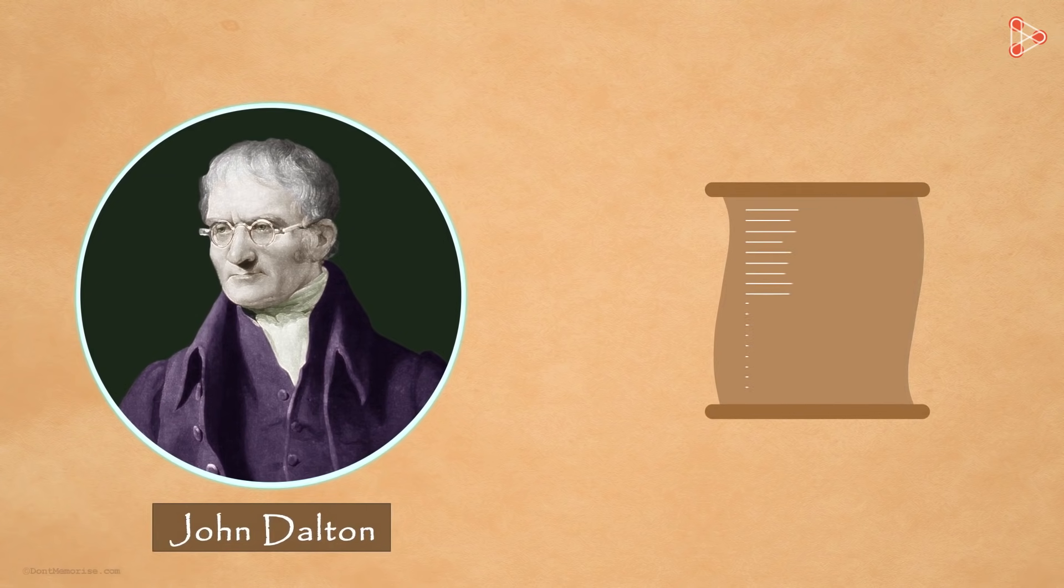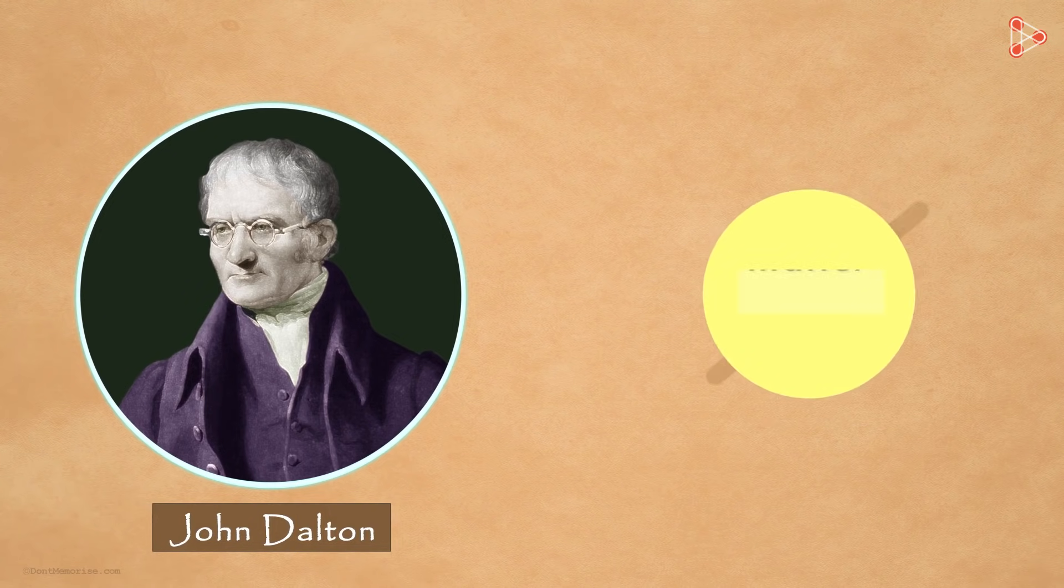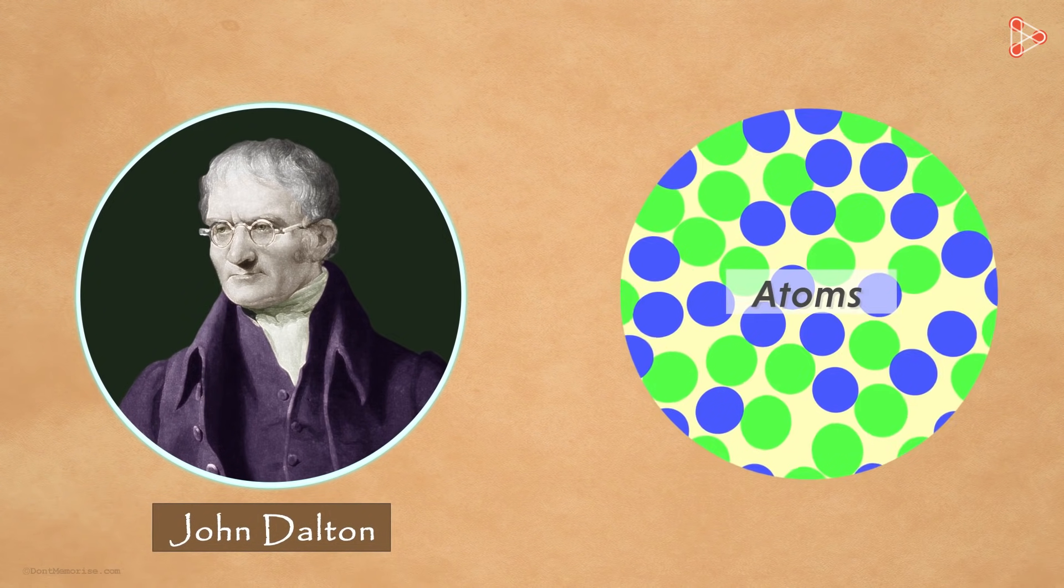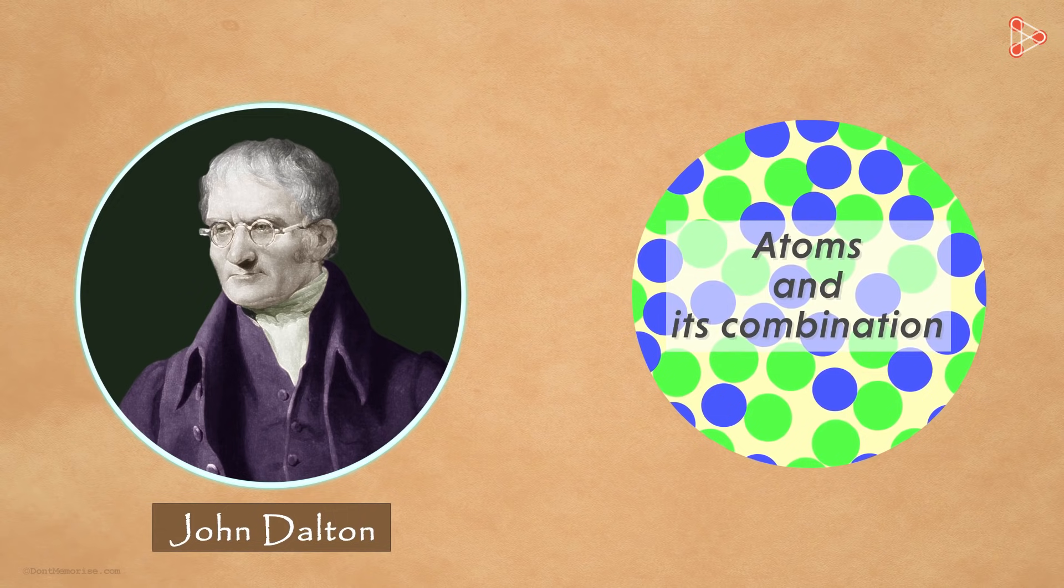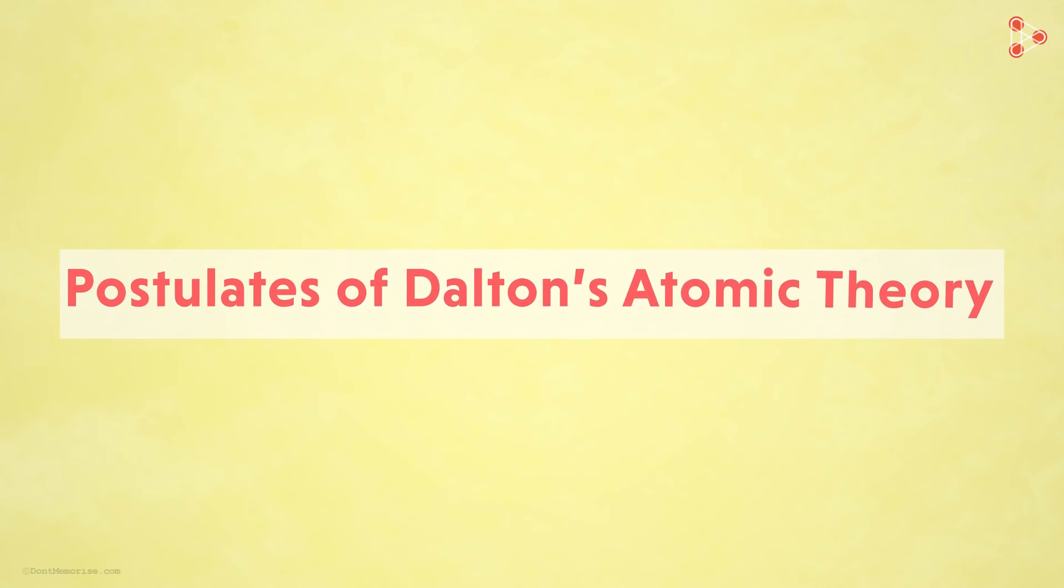He proposed a theory which was then known as Dalton's atomic theory. With this theory, many concepts regarding matter, composition of matter, atoms, and even combinations of atoms resulting in compounds were better understood. Let's first take a very quick look at the six major postulates of his theory.